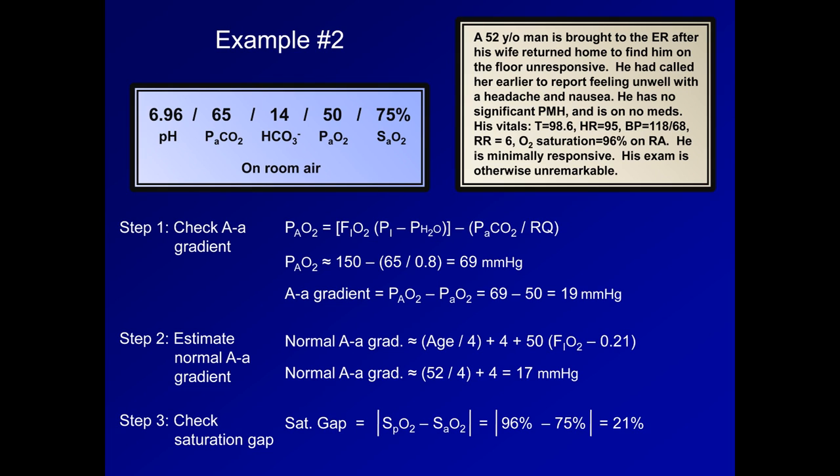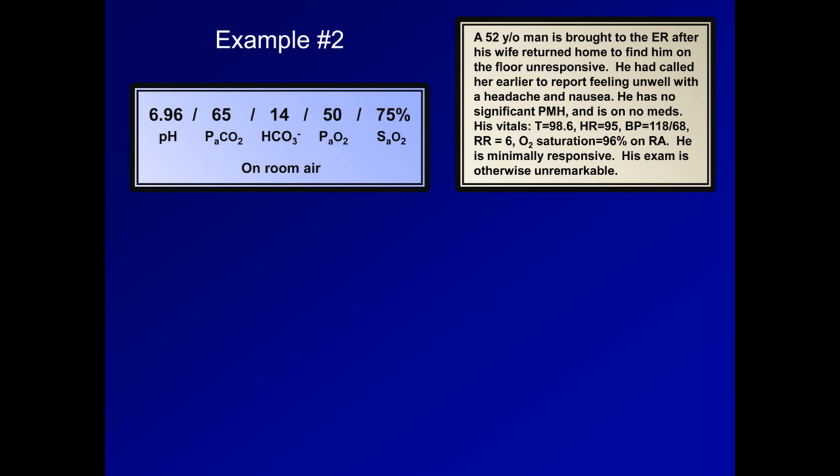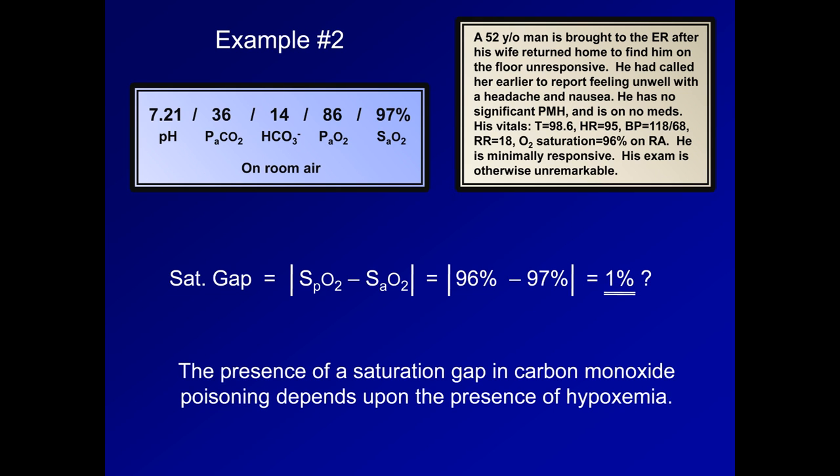However, there is a significant catch to relying on the saturation gap in that a significant gap will only exist in the presence of a low PAAO2. For example, imagine if this patient's wife came home 10 minutes sooner after he was already suffering from severe poisoning, but before he had started to hypoventilate. Our ABG might look like this. With a normal PaCO2, PAAO2 is also normal, and thus the O2 sat as calculated by the ABG analyzer will also be normal. Concisely stated, the presence of a saturation gap in carbon monoxide poisoning depends upon the presence of hypoxemia.